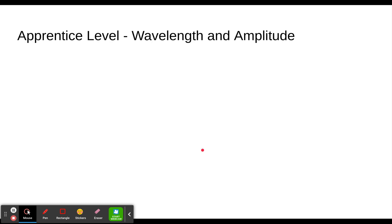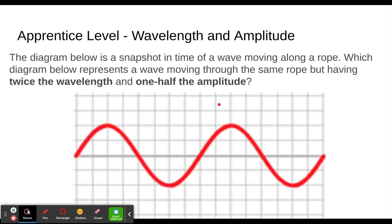The apprentice level is the first level. It just has you deal with wavelength and amplitude. It gives you a question with a picture: the diagram below is a snapshot in time of a wave moving along a rope. Which diagram below represents a wave moving through the same rope but having twice the wavelength and one half the amplitude? So we're testing whether you know what wavelength and amplitude are — can you double one and half the other?